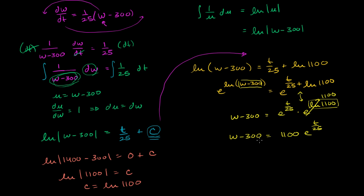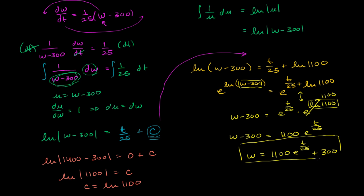Adding 300 to both sides: w is equal to 1,100 e to the t over 25 plus 300. And we're done. We have solved the differential equation and found the particular solution by solving for C using the initial condition — using just basic integration, without any fancy differential equation tools from a more advanced class.